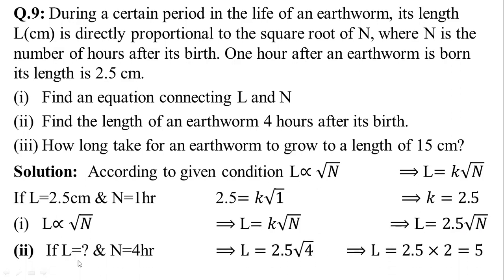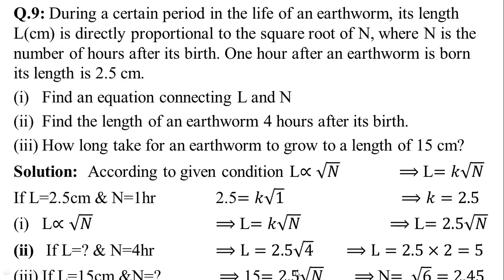In the second part, find the length when n is equal to 4. Putting in the relation: l is equal to 2.5 times the square root of 4. The square root of 4 is 2. So l is equal to 2.5 multiplied by 2, which equals 5 cm. In the third part, find how long it takes for the earthworm to reach a length of 15 cm. Putting l equal to 15: 15 is equal to 2.5 times the square root of n. Solving gives the square root of n equal to 6, so n is equal to 36.